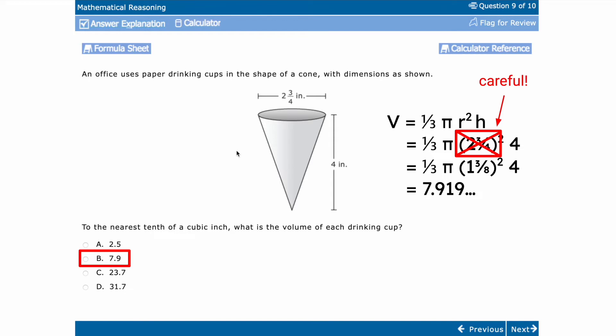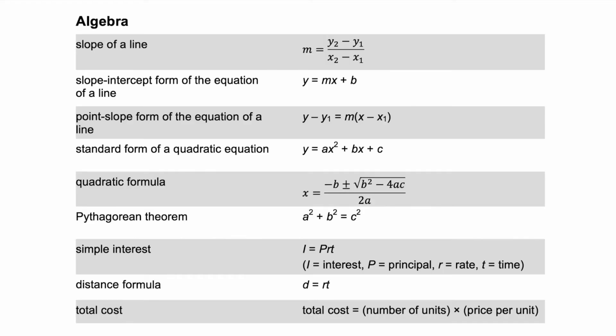The point here is that even if you know the formula sheet, this test is called 'mathematical reasoning' — not just the math test. You have to think through stuff. Know the difference between diameter and radius and reason carefully through problems. That was our geometry question. Now let's talk about algebra.